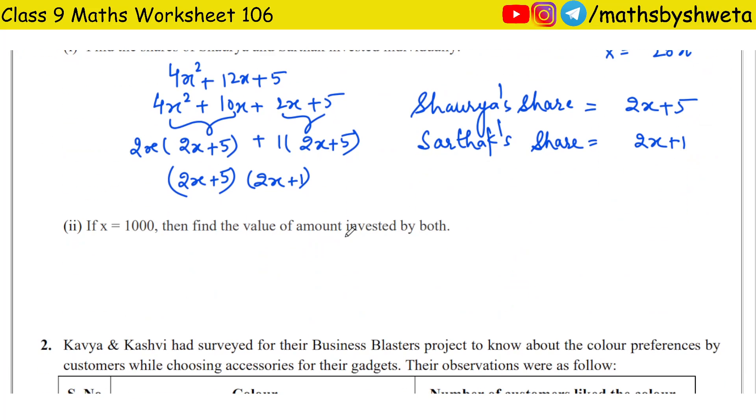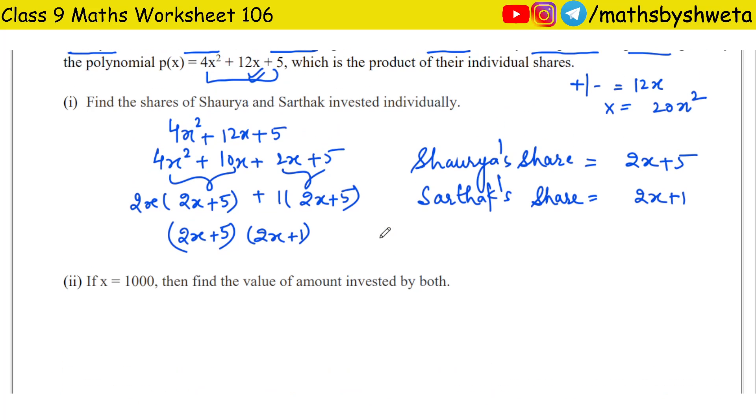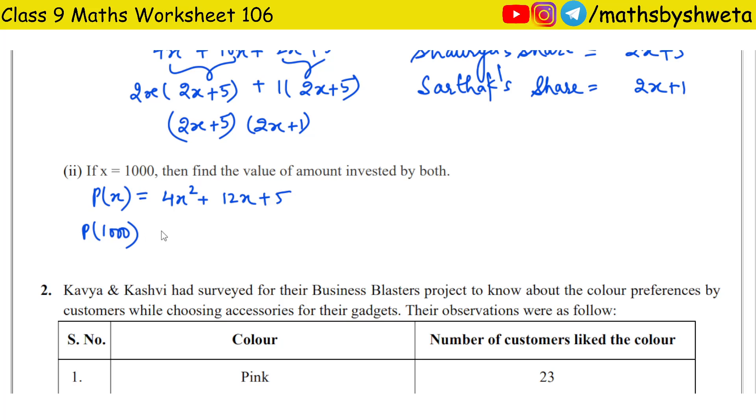Part (ii): Amount invested by both if x value is 1000. Then find the total amount invested. The polynomial is p(x) = 4x² + 12x + 5. Where x is 1000, so p(1000) = 4(1000)² + 12(1000) + 5. That gives us 4,000,000 + 12,000 + 5 equals 4,012,005.